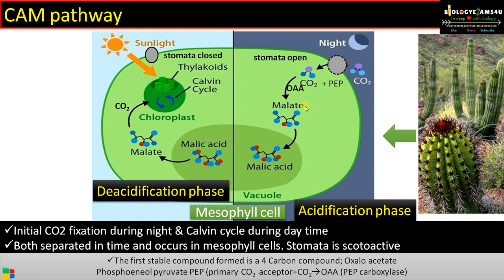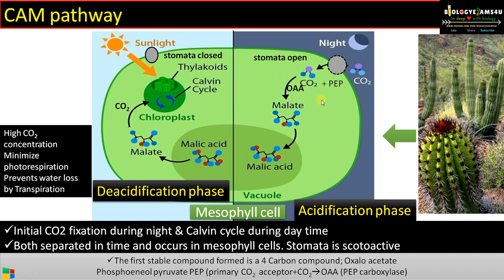Here, the first stable compound — just like the C4 cycle — is oxaloacetic acid. This pathway ensures minimum photorespiration and prevents water loss by transpiration, allowing such plants to survive in desert conditions.